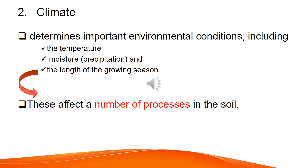The second factor is climate. Climate determines important environmental conditions. This includes temperature, moisture, and precipitation. The climate can also affect the length of the growing season. These climatic conditions affect a number of processes in soil formation.